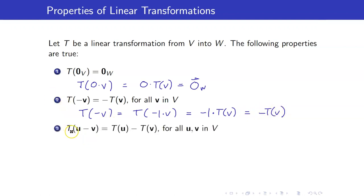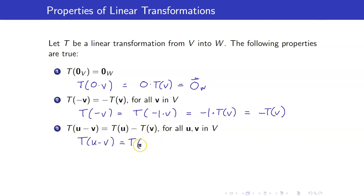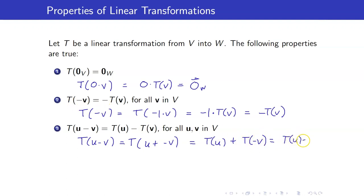Because of item 2, we can now write T of U minus V as T of U minus T of V. Before, in the definition of linear transformation, we could only do that if it's plus, but because we have shown this, we can now also distribute T over subtraction. By definition, U minus V is U plus negative V, so therefore this is T of U plus T of negative V. But T of negative V by property 2 is equal to negative T of V.